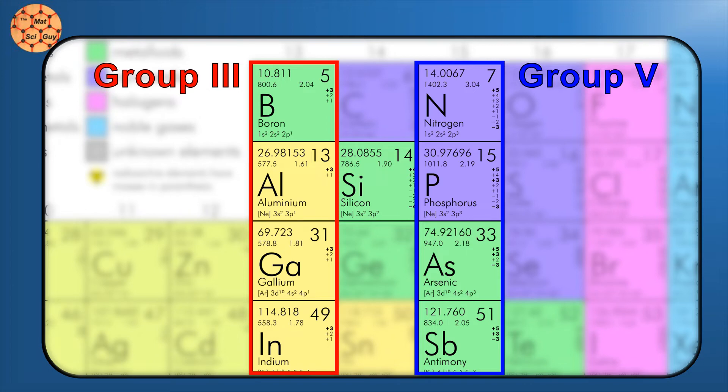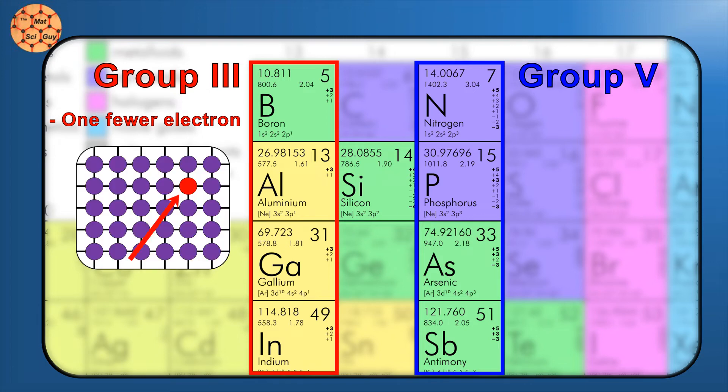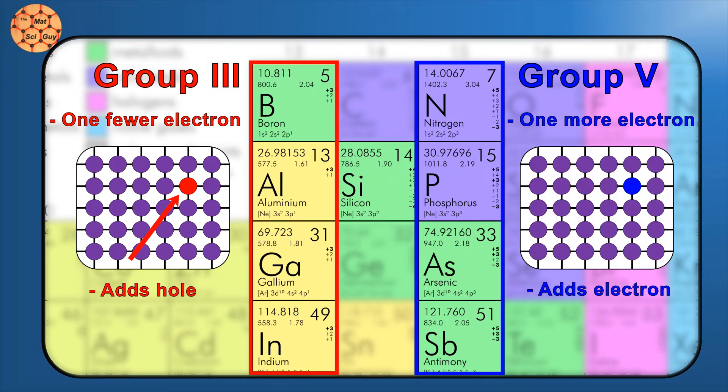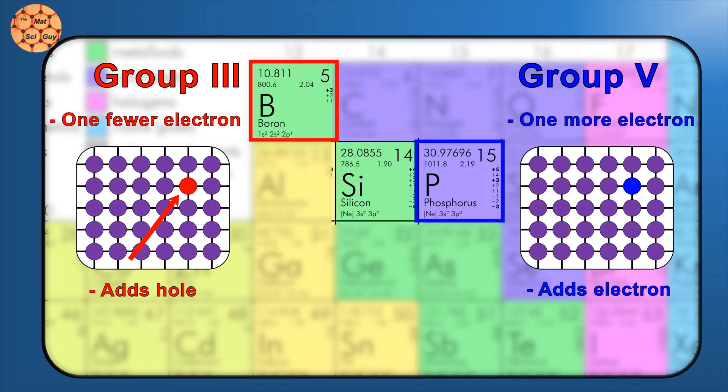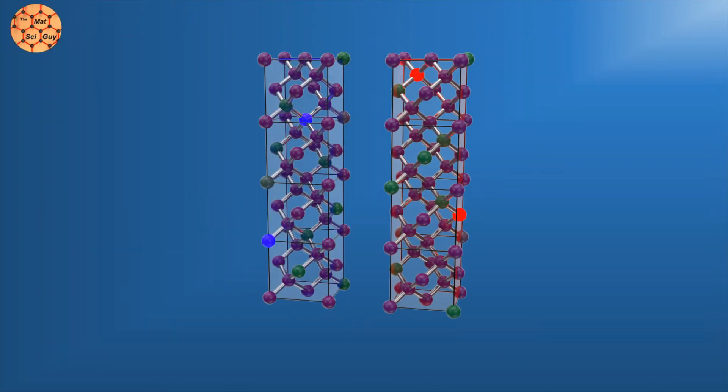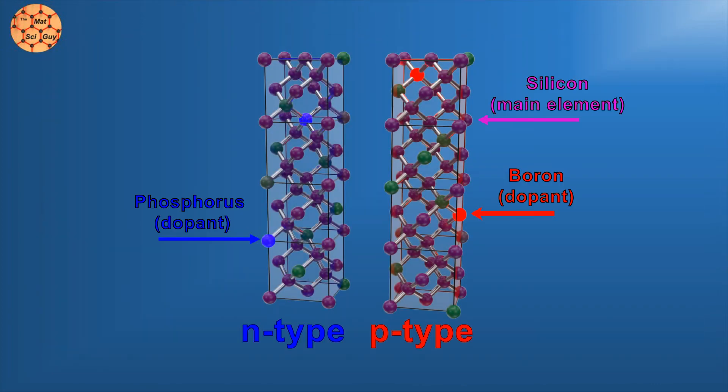Group 3 elements have one fewer valence electron than silicon, so if a group 3 element takes the place of a silicon atom, it essentially adds an extra hole. Conversely, group 5 elements have one more valence electron than silicon, giving it an extra electron. The most commonly used elements for this application are boron and phosphorus. We can now make p-type and n-type sides with the ideal carrier concentration.